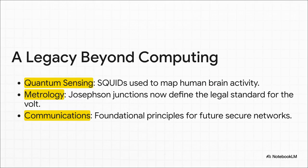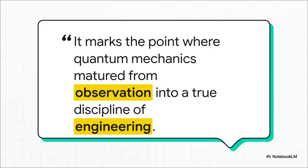But this wasn't just about building computers. Not by a long shot. The incredible sensitivity of these circuits led to devices called SQUIDs, which are now some of the world's most sensitive magnetic detectors, used for things like mapping human brain activity. And the physics they perfected is so precise that the Josephson Junction now officially defines the legal standard for the volt. Their work became foundational for everything from medicine to international standards.